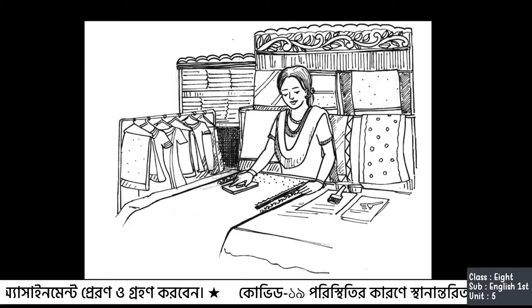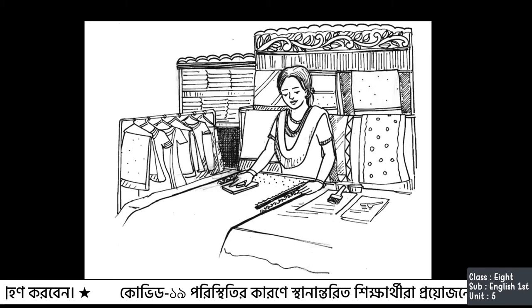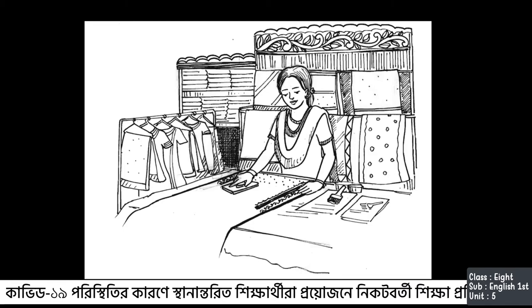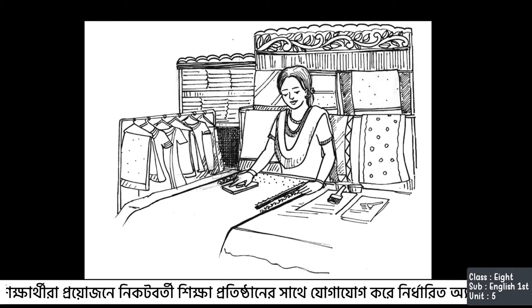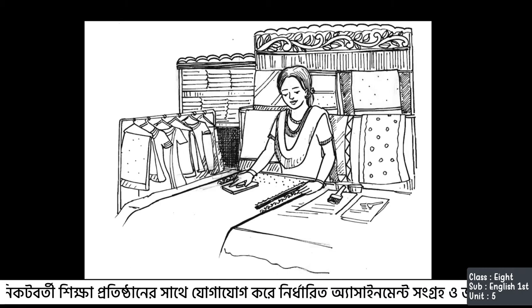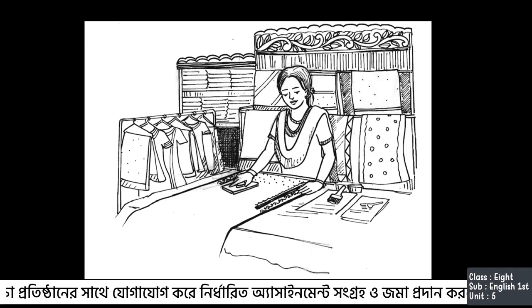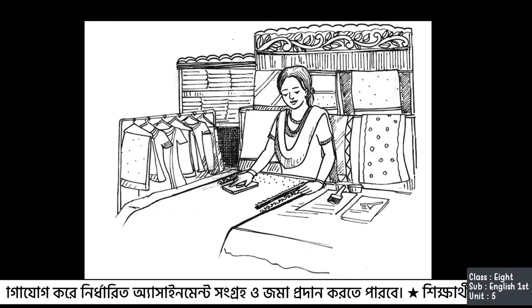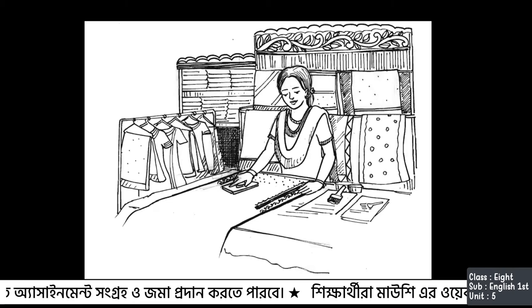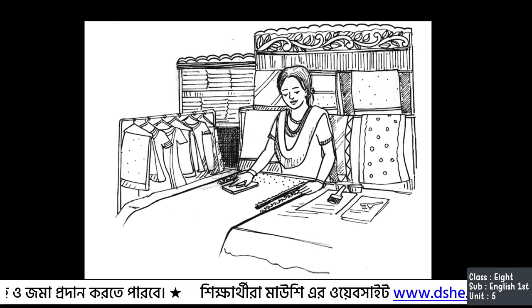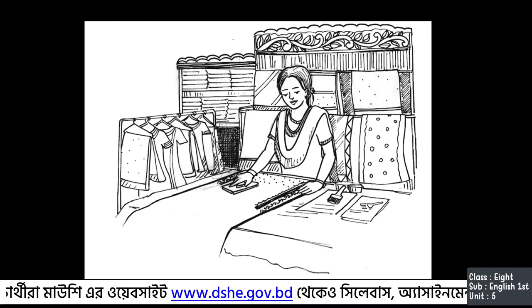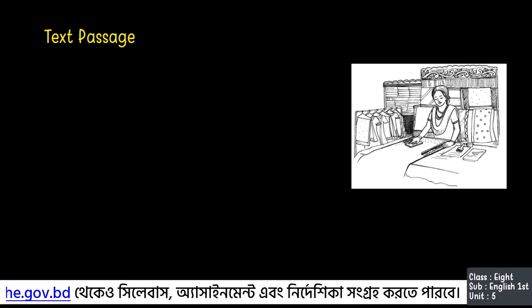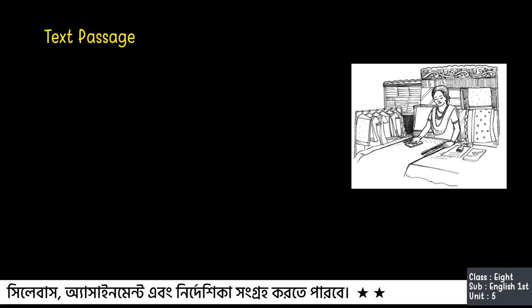Now, dear students, look at the picture and try to describe it. What do you see in the picture? In the picture, there is a girl. What do you think she is doing? I guess she is making block prints on cloth. Maybe she is designing cloths or fabrics. So, where is she working? Probably she is working in a boutique shop, as we can see other cloths displaying on the hanger. Now let's go straight to the textbook and read the text on page number 49.